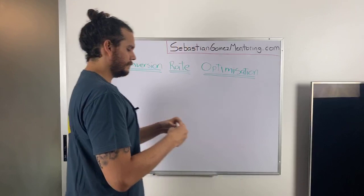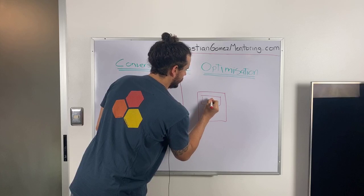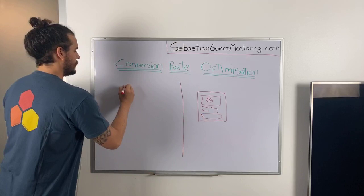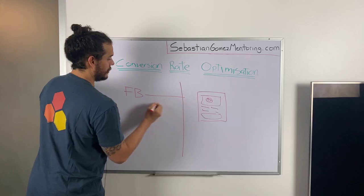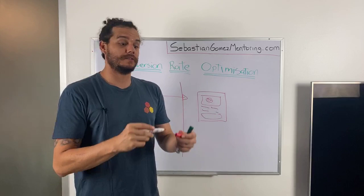So this is going to be your website — say you have a video here, text, and a button. And this is your Facebook ad. The most important part is that you're sending traffic from here to your site or any other pages.